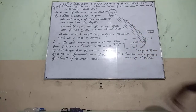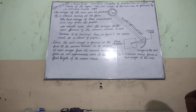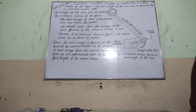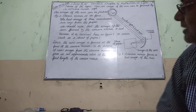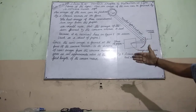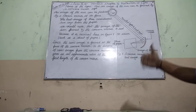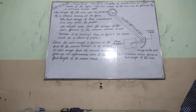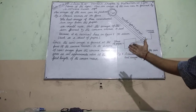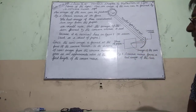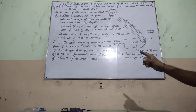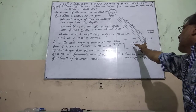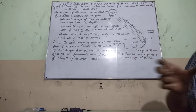We should know that the image of the sun formed by the concave mirror is a real image, because it is received on a screen. We should also know that since the sun's image is formed at the focus of the concave mirror, the distance of the sun's image from the concave mirror gives us the approximate value of the focal length of the concave mirror, denoted by small f.